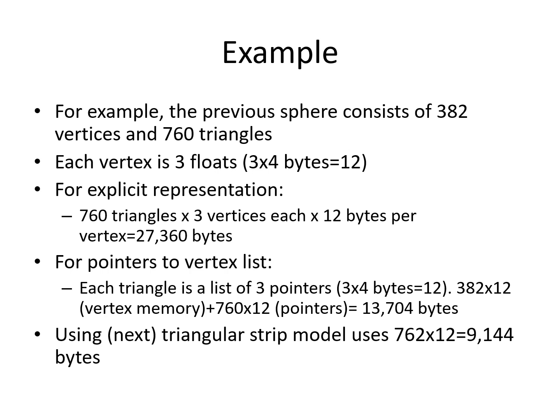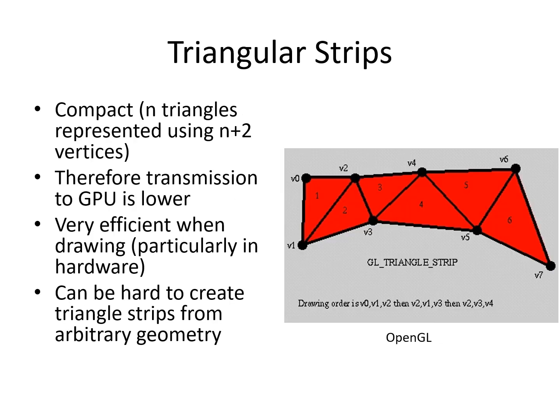There is a more space-efficient triangular strip model, which in this case takes 9,144 bytes. The triangle strip model assumes that any three consecutive points in the list make up a triangle. Triangle 1 uses points 0, 1, and 2. Triangle 2 uses points 1, 2, and 3, and so on through the list. Therefore, N triangles can be stored using N plus 2 vertices. The space seems to be the lowest, which helps with transmission time of the mesh to the GPU. It is also efficient to render these in hardware, as some of the edge calculations can be reused, but it is difficult to create triangle strips from arbitrary geometry.